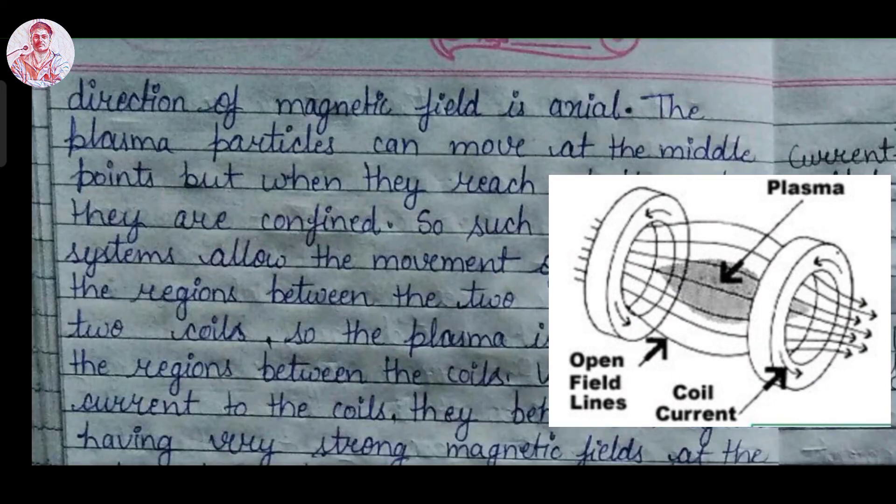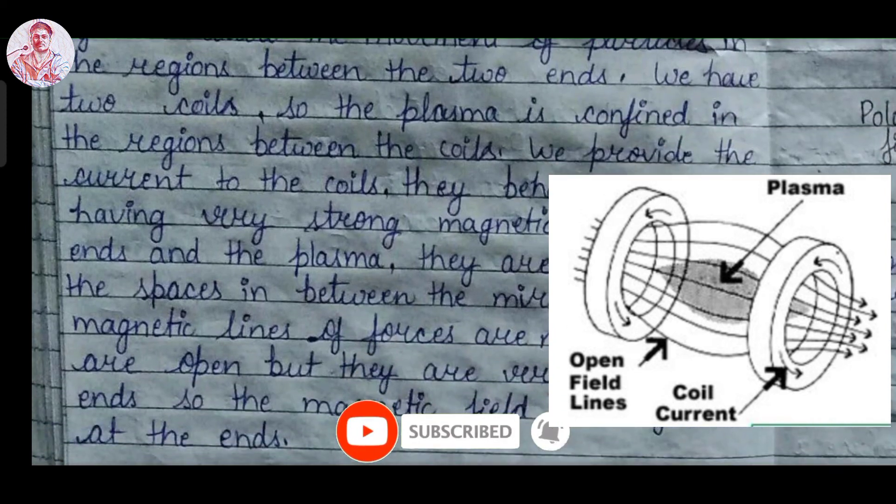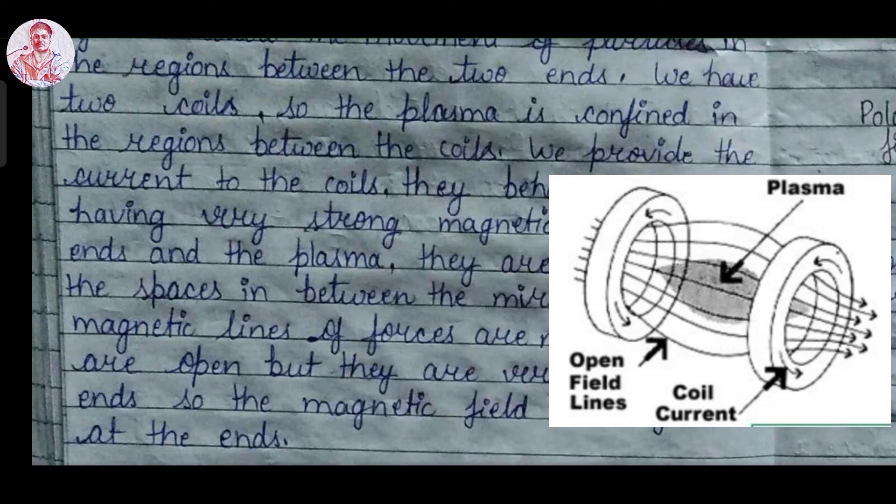The direction of the magnetic field is axial. The plasma particles can move at the middle point but when they reach the end, they are confined. So this type of open system allows the movement of particles in different regions between the two ends. We have two coils. Plasma is confined in the region between the coils. We provide current to the coils. They behave like a magnet having very strong magnetic field at the end of the plasma. They are confined in the space between the mirrors. Here the magnetic lines of force are not closed. They are open. At the end, they are very dense.